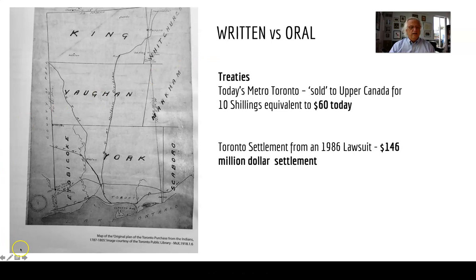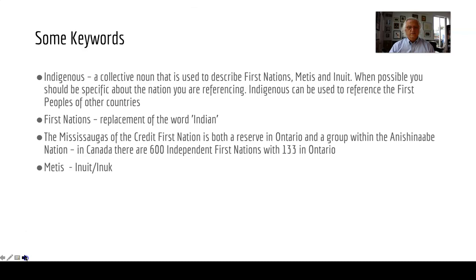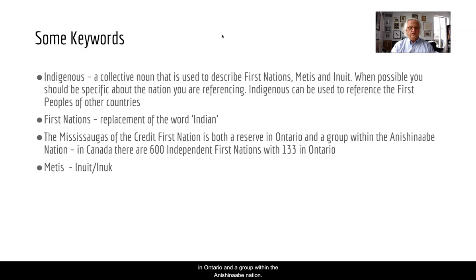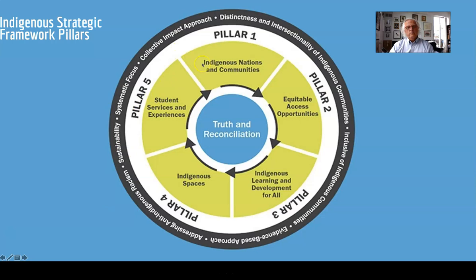Some key things to think about: 'Indigenous' is a noun we use to describe First Nations people who self-identify as Métis and Inuit people — you should be specific about the nation you're referencing. 'Indigenous people' can also be used to reference the first peoples of other countries. 'First Nations' is a replacement for the word 'Indian,' just as 'Inuit' is a replacement for the word 'Eskimo.' The Mississaugas of the Credit First Nation is both a reserve in Ontario and a group within the Anishinaabe nation. There are 600 independent First Nations across Canada and 133 independent First Nations or tribes across Ontario — a large group of approximately 600,000 people.